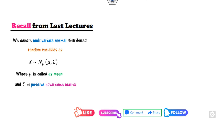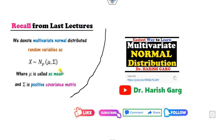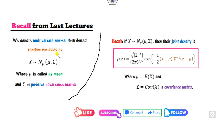To quickly recall what we discussed in the last lecture: we defined the multivariate normal distribution, which has two parameters — one is called the mean and the second is called the positive definite covariance matrix. We also defined the probability density function: if x follows the multivariate normal distribution, then the joint density function is defined as shown.